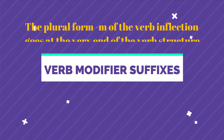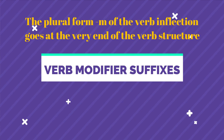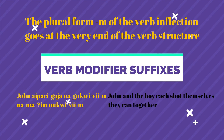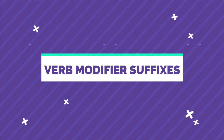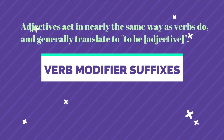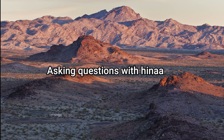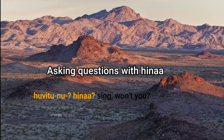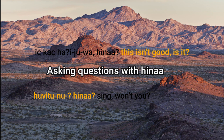The plural form of the verb inflection goes at the very end of the verb structure. Adjectives act in nearly the same way as verbs do and generally translate to be + adjective, such as to be hot, to be cold, etc. To ask a question like won't you or isn't it, you simply add hinna to the end. For example: hu vitu nu hinna means sing, won't you? And iskas ha'i yuwa hinna means this isn't good, is it?